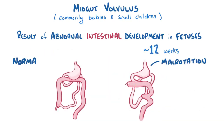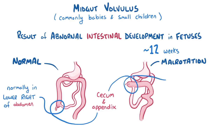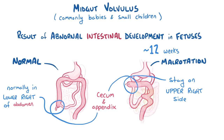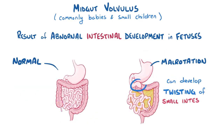Malrotation happens when the cecum and the appendix, which are normally found in the lower right side of the abdomen, stay in the upper right side. Babies with malrotation can later develop twisting of the small intestine, which is a midgut volvulus.